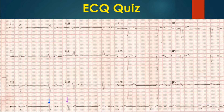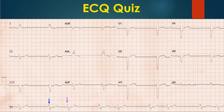The rhythm strip shows sinus bradycardia with junctional escape beats marked by blue arrows, without preceding p-waves. They have the same QRS morphology as the succeeding sinus beat marked by the violet arrow. The sequence of junctional escape followed by a sinus capture beat continues throughout the rhythm strip. This constitutes an escape capture bigeminy.